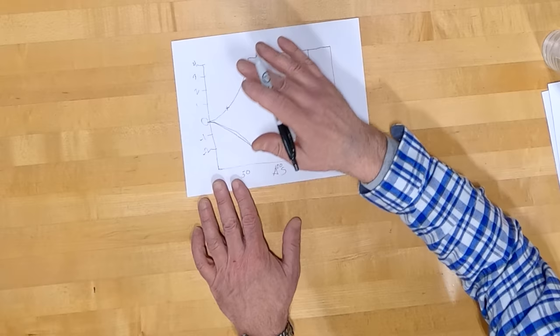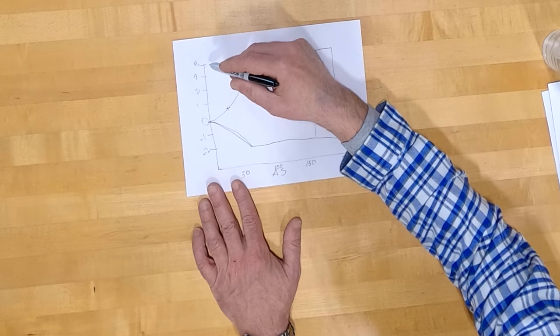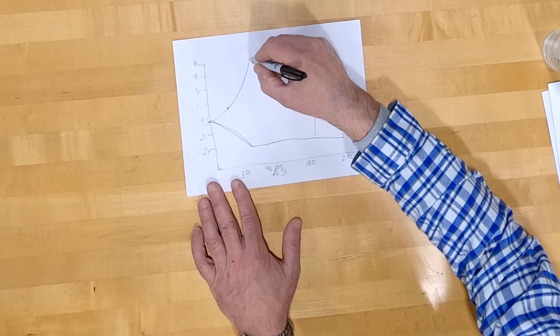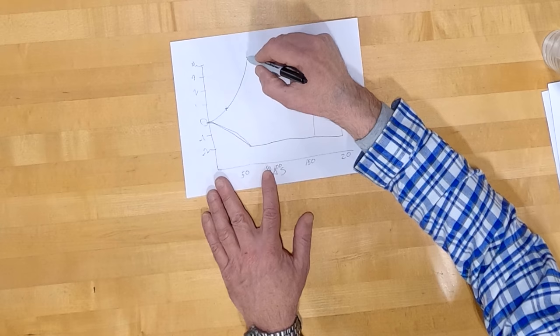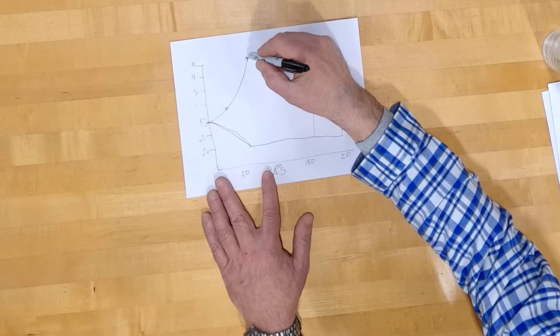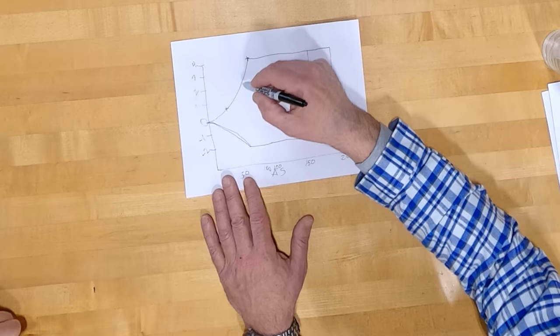Our perfectly designed normal or utility category airplane has a plus 4g limit — we'll call it plus 4 because it makes the math easier. So if we double the airspeed from 50 to 100 knots, what's the load factor when the airplane stalls? Double the airspeed means four times the load factor, so we're at 4g. At this corner of the envelope the airplane has 4g's available. If we were at 2g's, the square root of two is 1.414, so that's 50 times 1.414 — somewhere around 70 miles an hour.